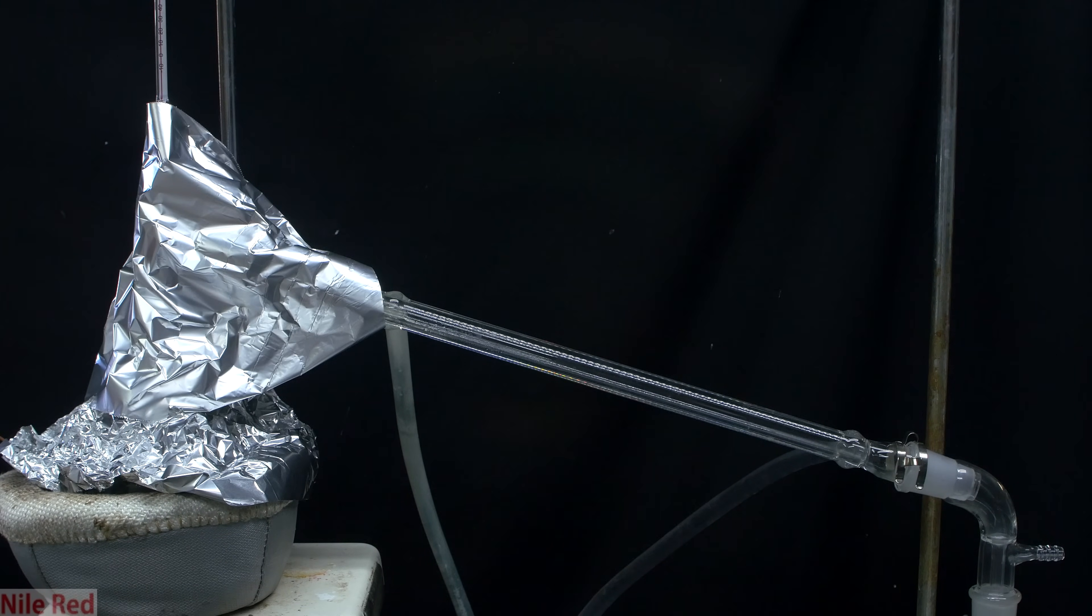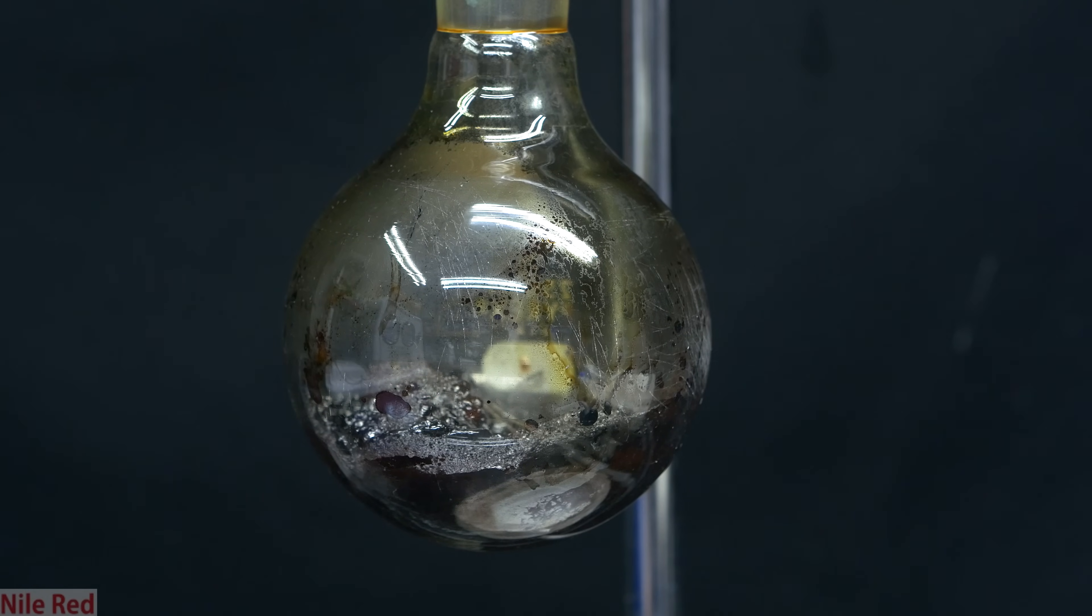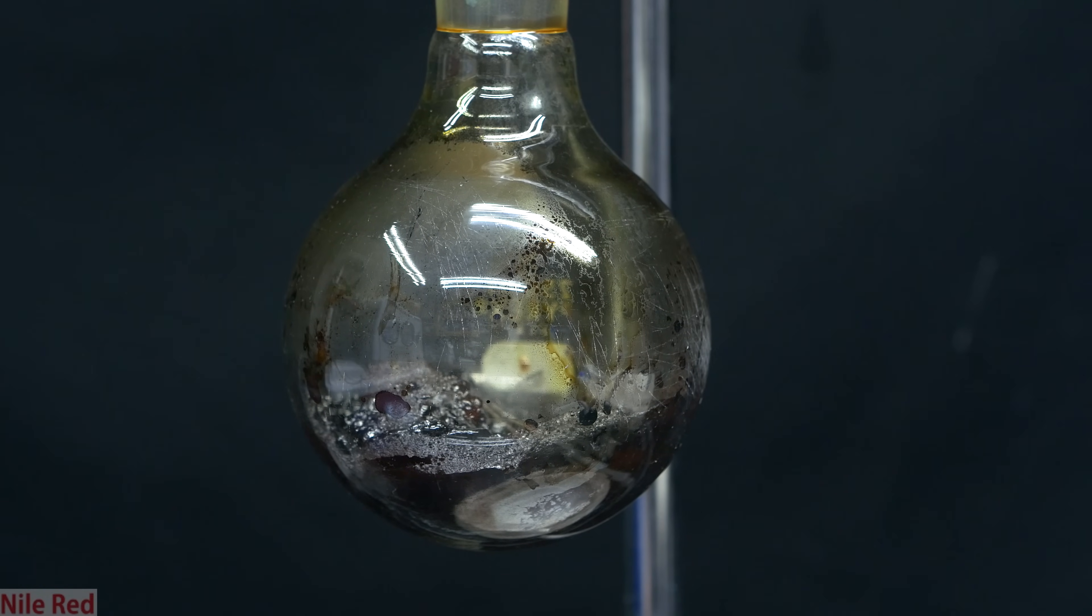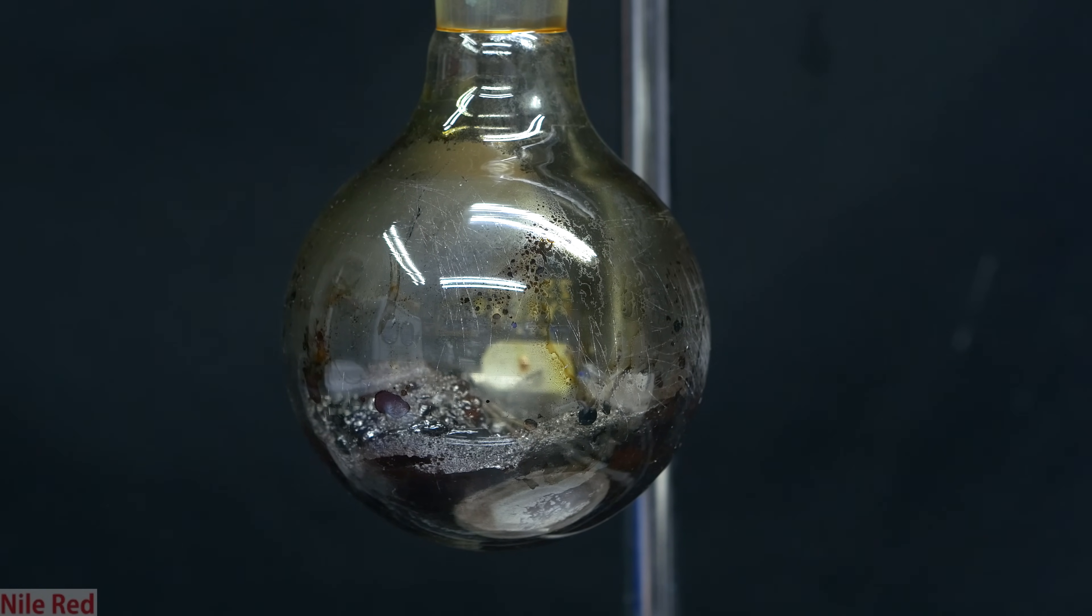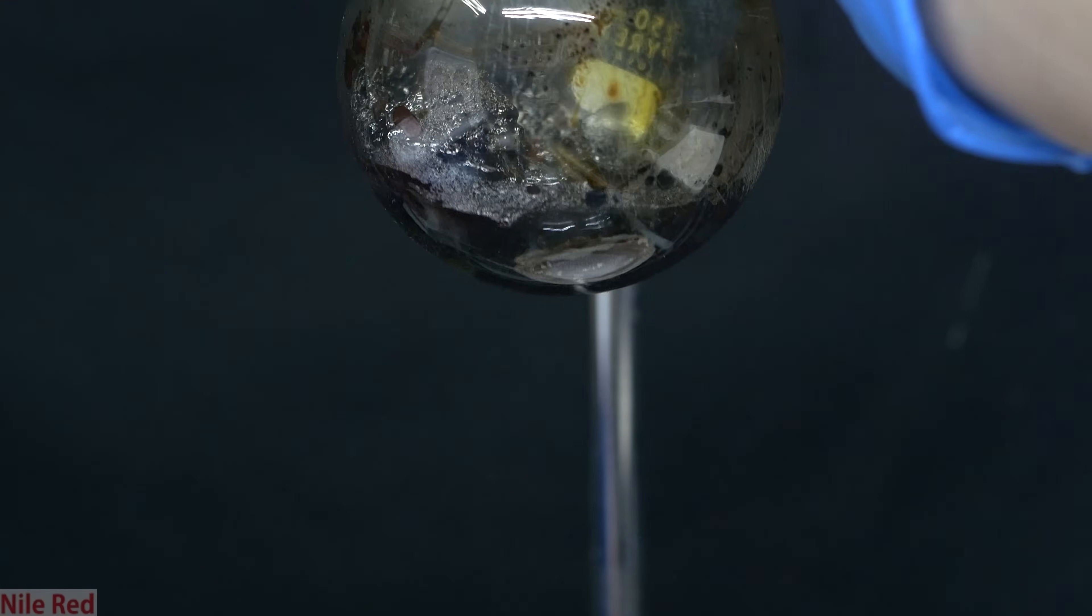As we got near the end of the distillation, I added a little bit more insulation to help things come over. By the end we had a fairly nice amount of yellow distillate, but unfortunately most of this is probably water. Once things have cooled down, we can look at our distillation flask, and it actually kind of looks a little cool. The residue at the bottom looks pretty solid, and unfortunately I didn't film it, but it can easily be broken up and powderized with a spatula.